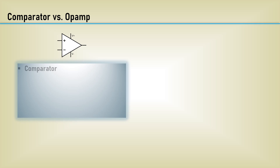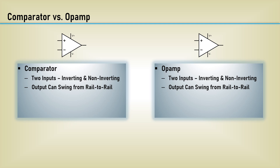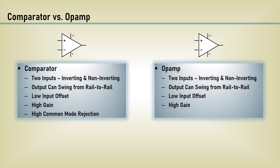Let's take a look at the comparator versus the op amp. The comparator has two inputs, the inverting input and the non-inverting input — so does the op amp. The output of a comparator can swing almost rail to rail, so can the op amp for the most part. The comparator has a low input offset voltage, high gain, and high common mode rejection — and so does the op amp.